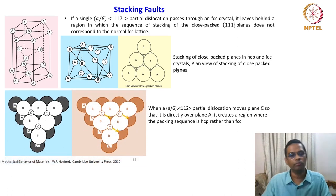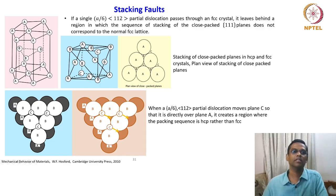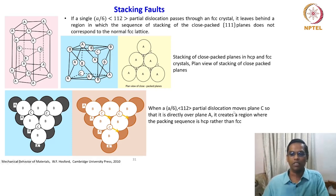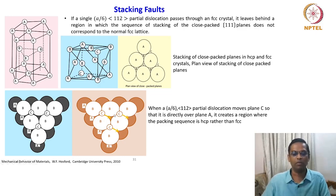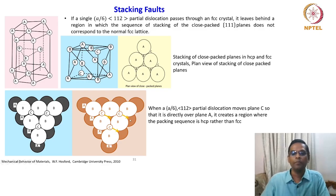This is the stacking view. Suppose if you have a partial dislocation trying to move from one position to another — from a C void to a B void. The same A/6 partial dislocation moves a plane C. It tries to move from the equilateral triangle void to the inverted triangle void position. This movement creates a packing sequence change: it creates a region where the packing sequence is HCP rather than FCC.